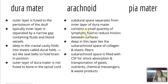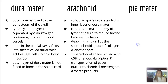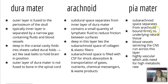The arachnoid is separated from the inner layer of the dura mater by the subdural space, and it contains a small quantity of lymphatic fluid to reduce friction between surfaces. Deep in the arachnoid lies the subarachnoid space, which is made up of collagen and elastic fibers, giving that spider-like appearance. The subarachnoid space is filled with cerebrospinal fluid for shock absorption, transportation of gases, nutrients, chemical messengers, and waste products. The pia mater is separated from the arachnoid by the subarachnoid space, is bound firmly to underlying neural tissue, and blood vessels servicing the CNS run across this layer. It is highly vascular, which aids in meeting the high metabolic rate of the central nervous system.